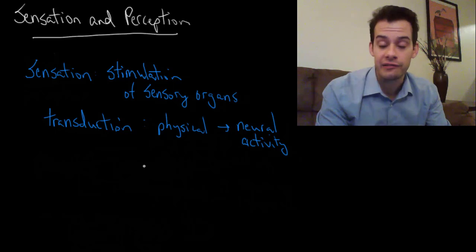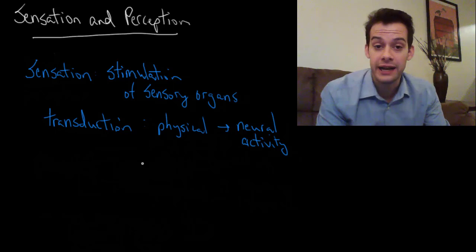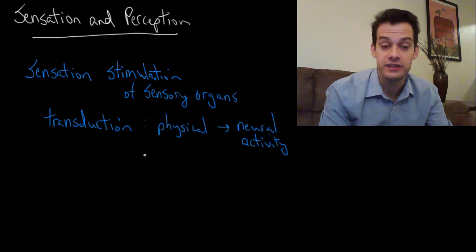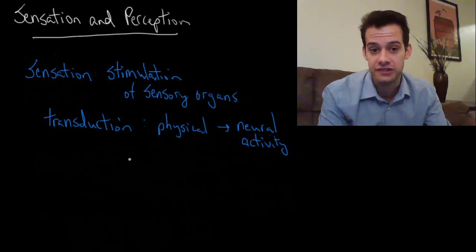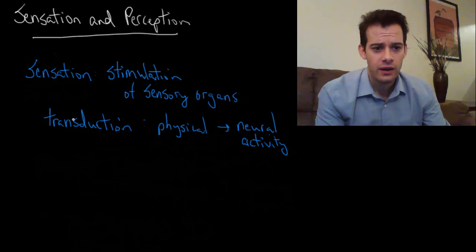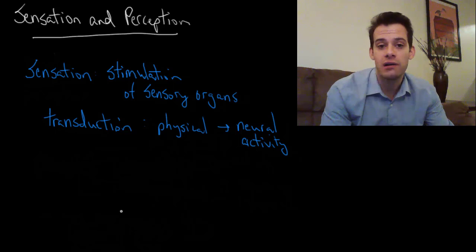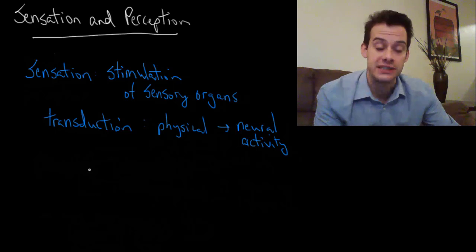In future videos for each of our senses, I'll go through and explain how we get from the physical to neural activity. So we'll see the process of transduction for each of our senses. We have this stimulation, it gets converted into brain activity, and now we can start thinking about the process of perception.